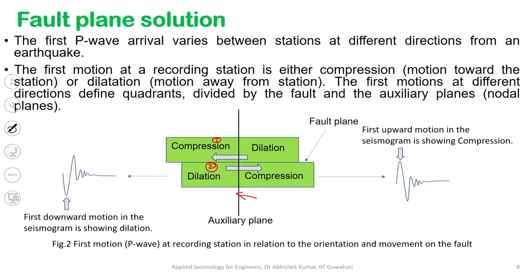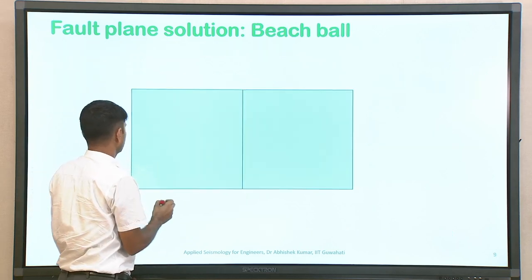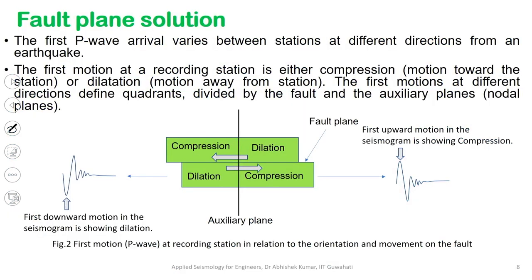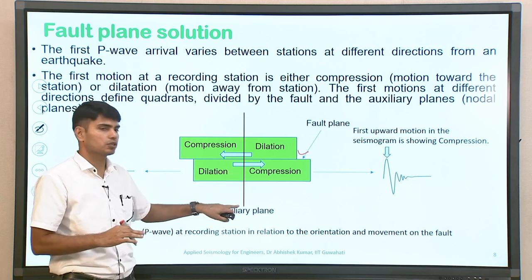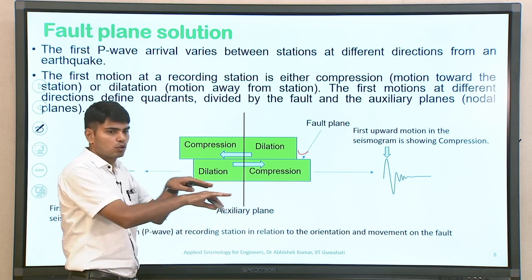Consider an example of strike-slip faulting. There are two blocks moving with respect to each other along the fault plane. There is a fault plane along which two blocks are moving, and perpendicular to that fault plane there is another plane called the auxiliary plane. Remember that in physical interpretation, there is no auxiliary plane — we will understand its importance later. The two blocks — fault block one and fault block two — are moving with respect to each other considering a strike-slip fault example.